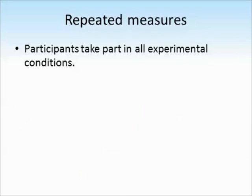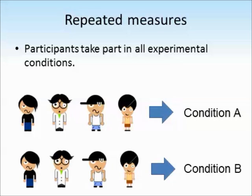In a repeated measures design, all participants take part in all of the experimental conditions. So one group of participants would take part in condition A and then the very same group would take part in condition B. Think about boredom or practice effects — if by the time participants reach condition B or C they've had lots of practice or are tired, what effect might this have on later results? Because all participants are the same, we're comparing like for like, and we've minimised participant variables by using a repeated measures design.